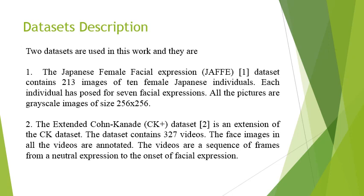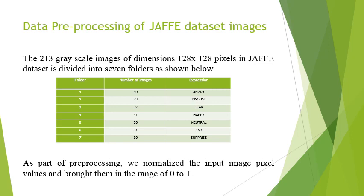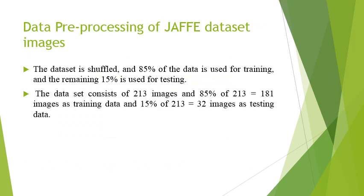For data pre-processing, we have taken two datasets: one is the Japanese Female Facial Expression (JAFFE) dataset, and the other is the Extended Cohn-Kanade (CK+) dataset. The images are organized so that all angry images are in one folder, all disgust images in another, and so on. As you can see in this table, there are 30 angry images and 29 disgust images. I have normalized the images so that pixel values are between zero and one.